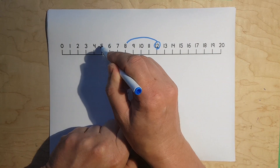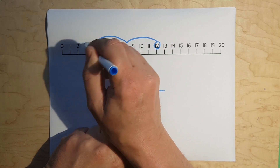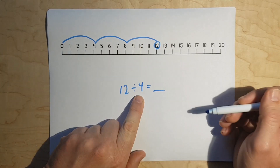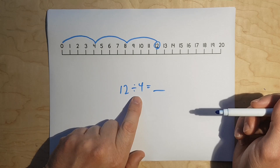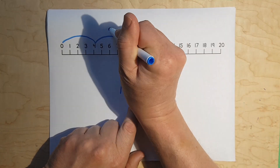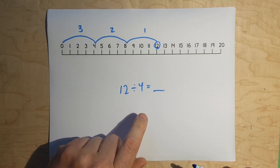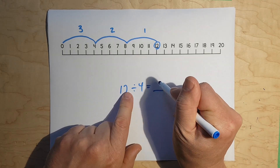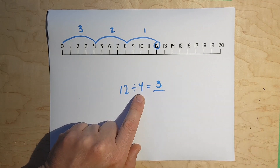We jump again — 1, 2, 3, 4. And again — 1, 2, 3, 4. Now we have 3 skips: 1, 2, 3. So, 12 divided by 4 equals 3.